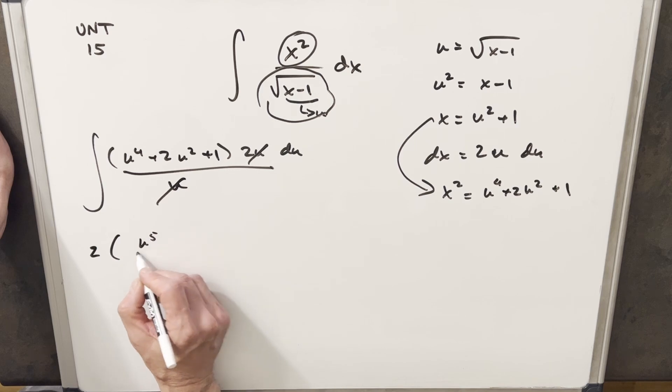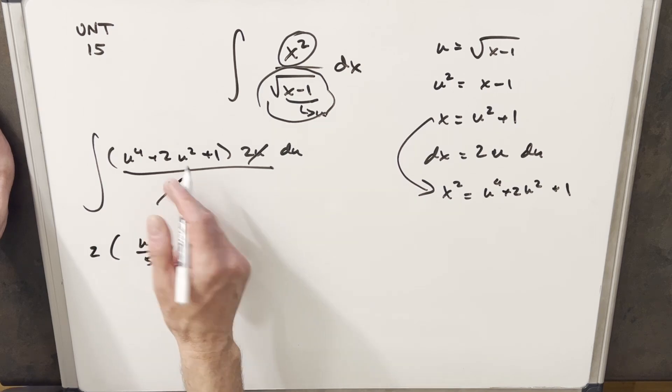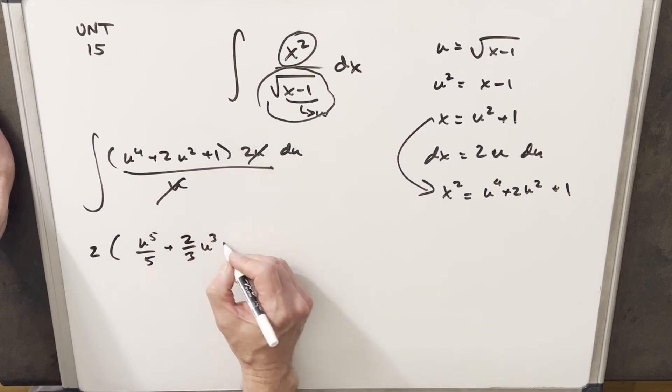Integral of u to the 4th, this is going to give us u to the 5th over 5. Here, 2u squared, the integral of that is going to be 2 3rds u cubed, the integral of 1 is just going to be u.